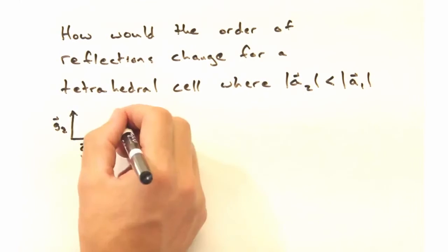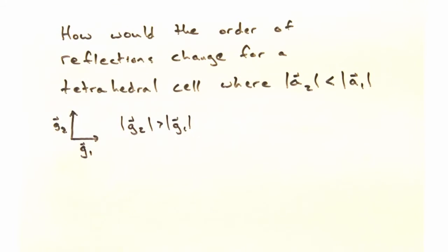Because the A2 axis is the shortest in real space, when we draw the reciprocal lattice, G2 will be longer than G1.